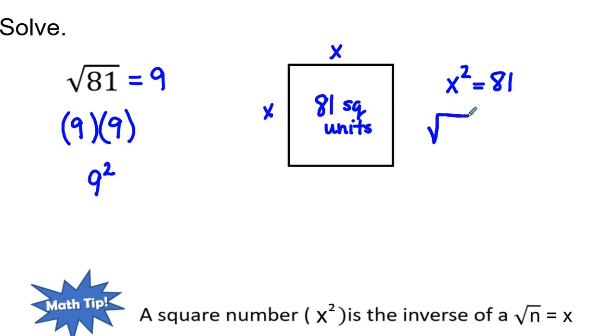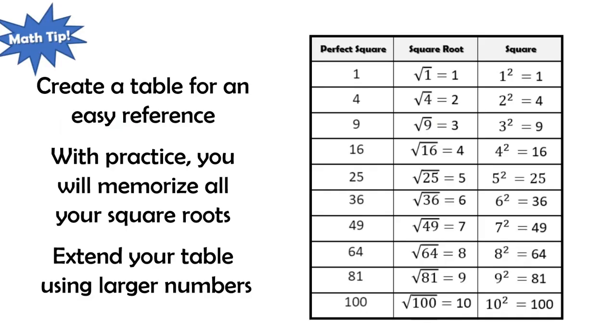If I said that this value was x and this value was x, we know that x squared is equal to 81. Using my inverse principles, I know that the square root of x squared is going to give me a value of x, and the square root of 81 is going to equal 9. So both sides, or all four sides, of this square is going to be x equals 9.